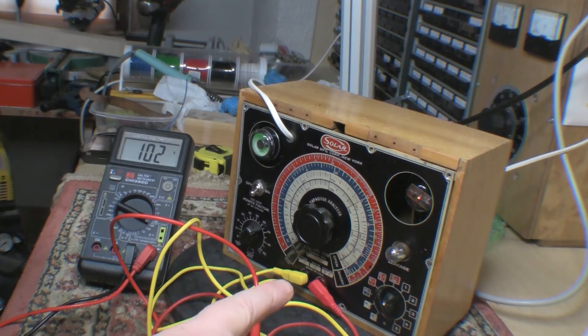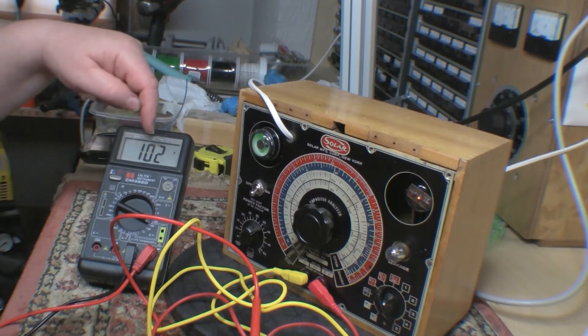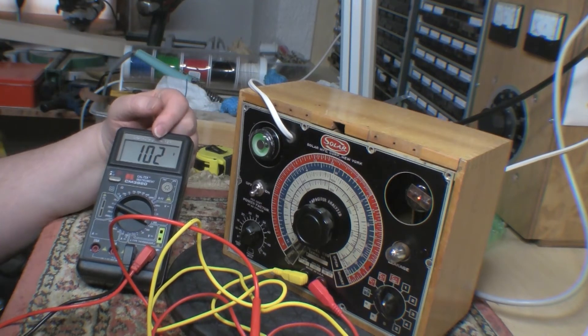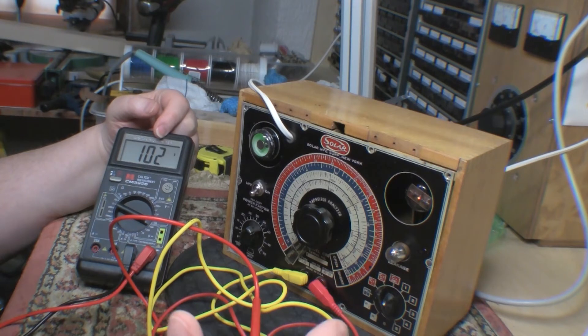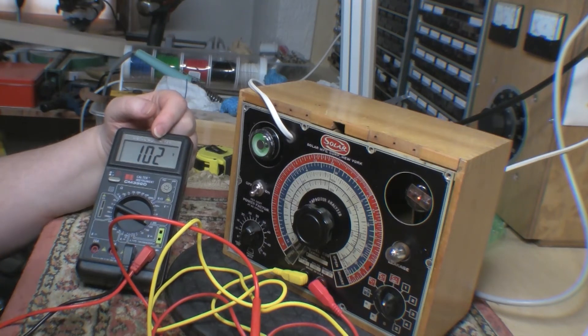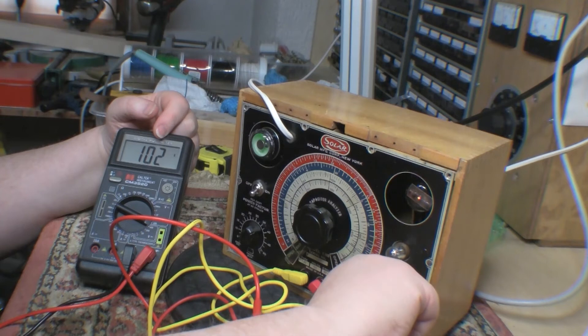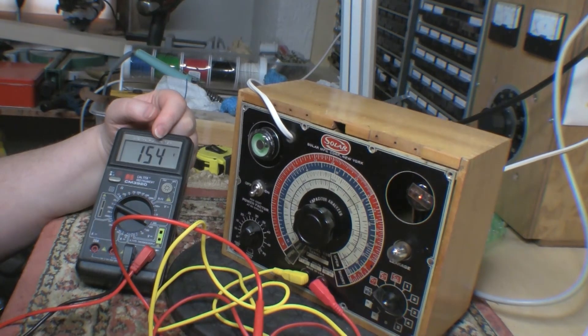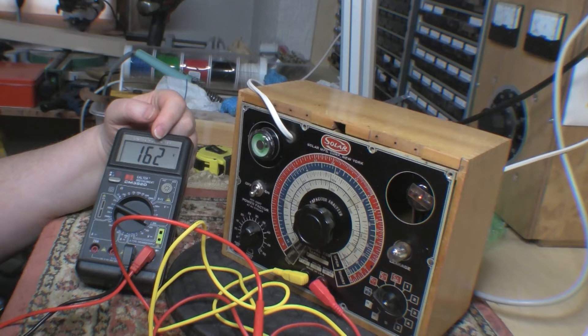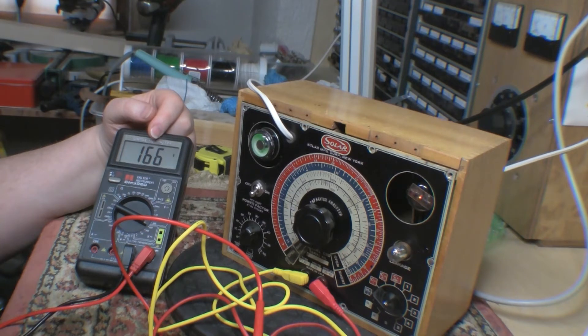The switch position is set to 5 and the voltage I'm measuring here is 102 volts, which is in line with the way the manual says. So I go to position 4. Okay that only went up to 164, 165. Still climbing slowly.